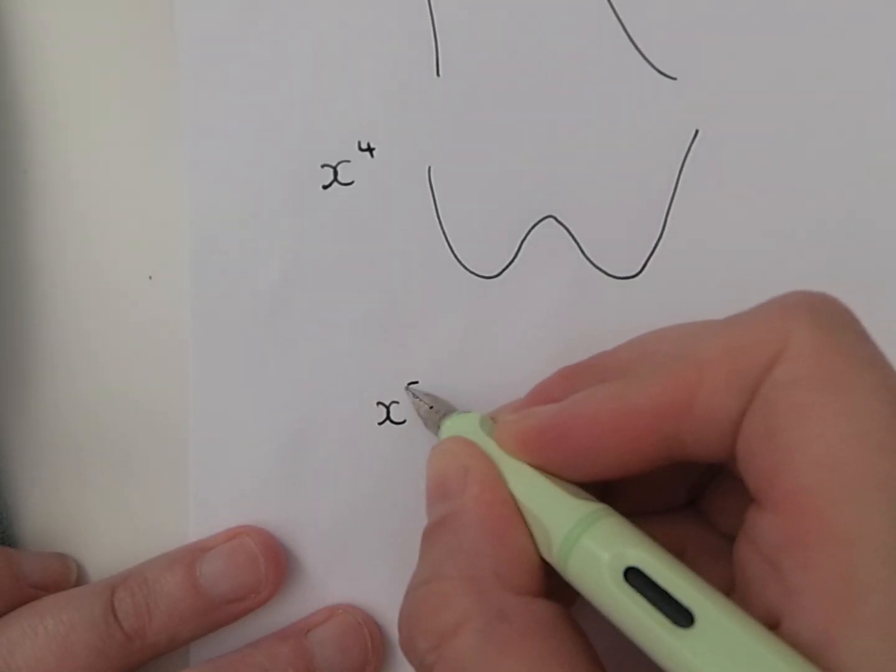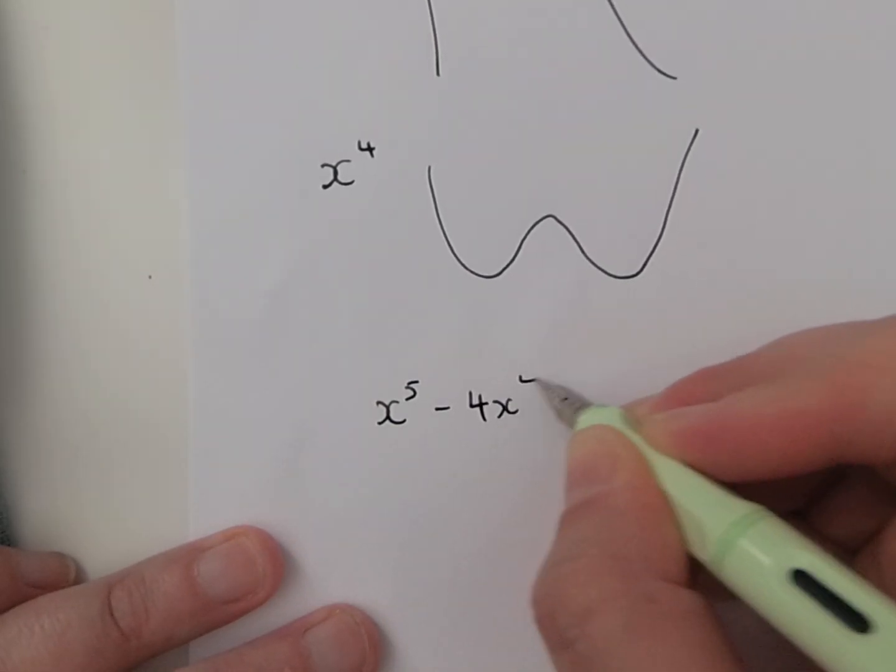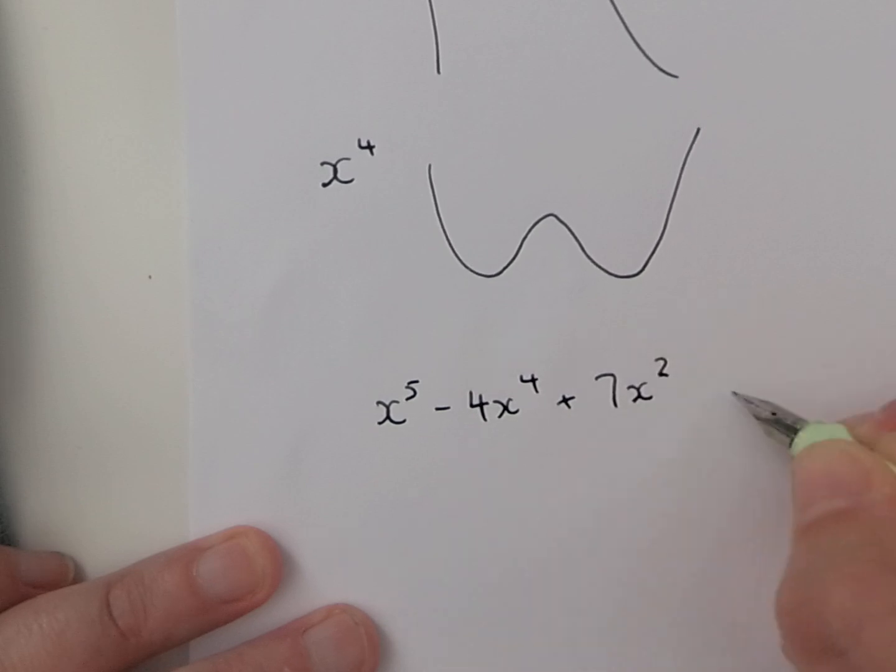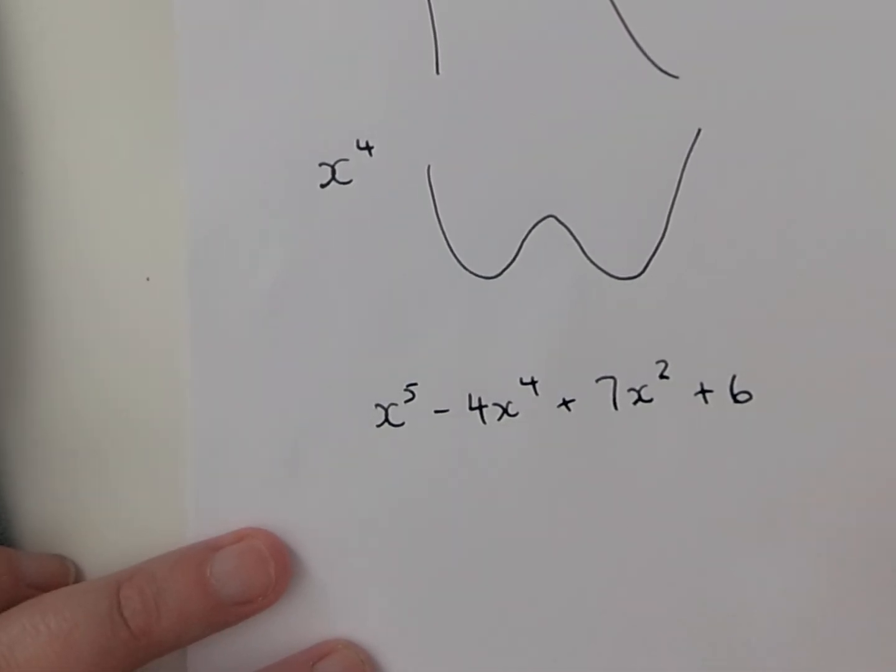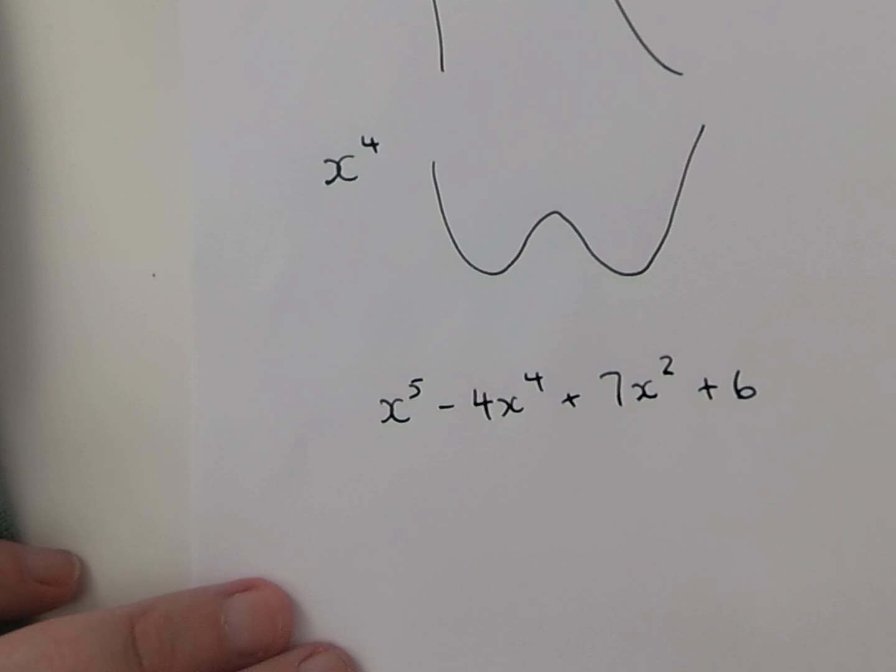If you have integer powers of x, for example this equation here, involves integer powers of x. Whatever the graph looks like, I know that graph is going to be continuous, so it's not going to have any jumps or any asymptotes or anything disconnecting the curve.